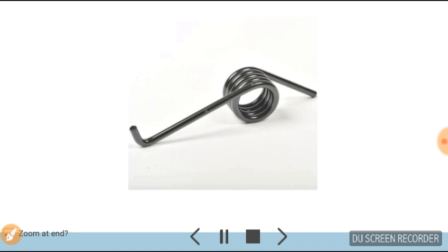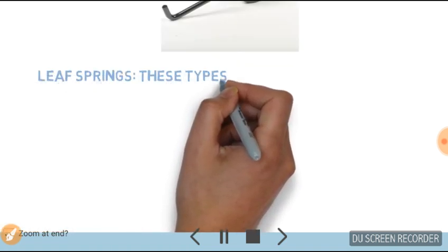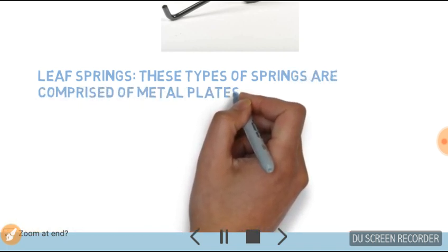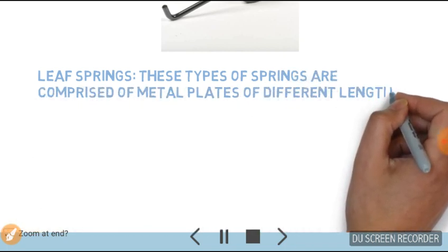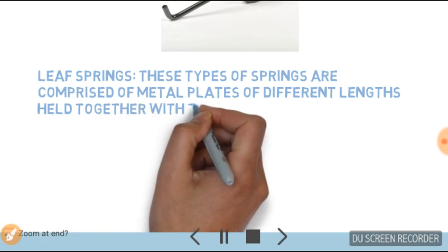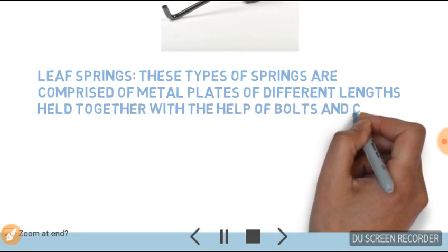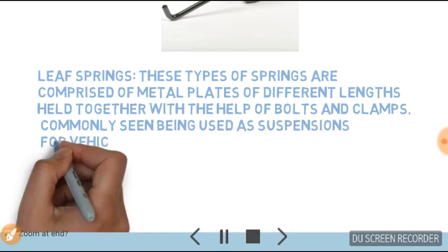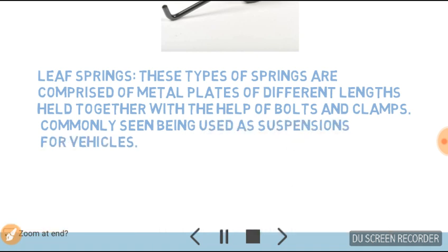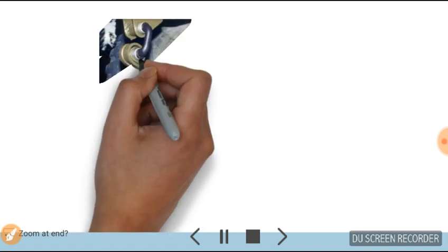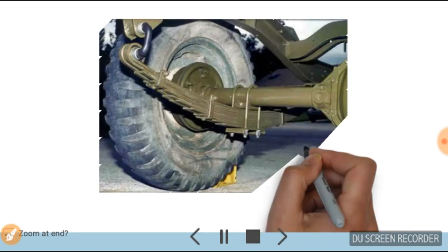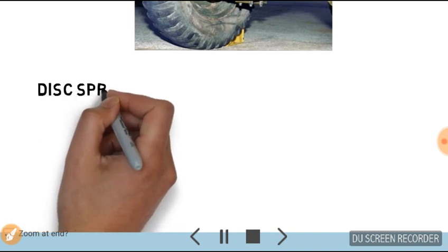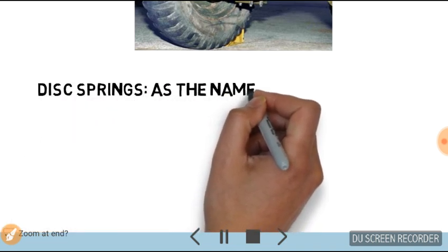Leaf springs are comprised of metal plates of different lengths held together with the help of bolts and clamps. They are commonly seen being used as suspension for vehicles in automobiles. This is the best example of a leaf spring in automobiles.